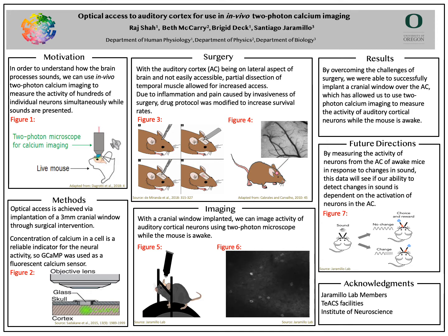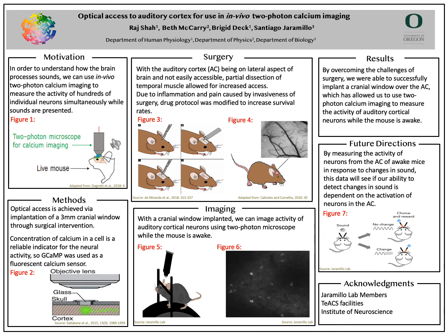In figure four you can see that when a cranial window is successfully implanted, we're able to see the arteries in the brain directly through the cranial window imaging. When the mouse is head-fixed on the wheel in figure five, we can see that once the microscope is set up above the cranial window, the mouse is able to move while we are still able to image.